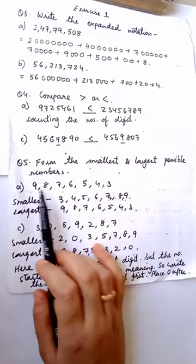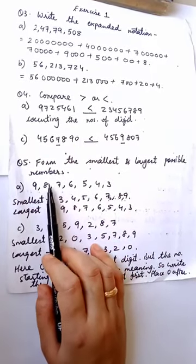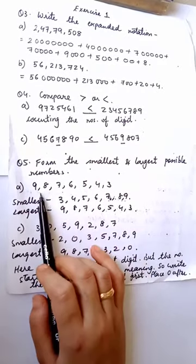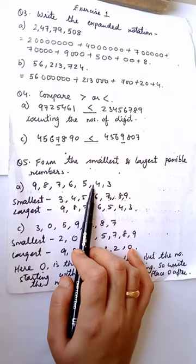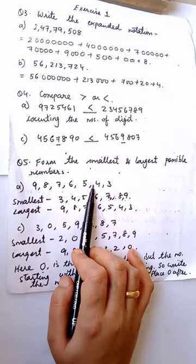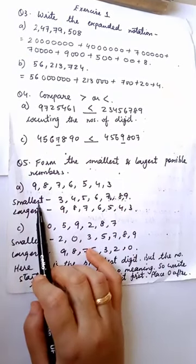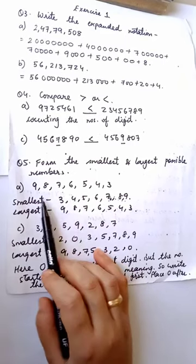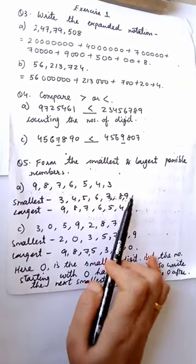Let's see question number 5: form the smallest and largest possible numbers. You are going to write down the smallest and largest numbers from these digits. For the smallest, from ascending order — write the smallest number first: 3, 4, 5, 6, 7, 8, 9.